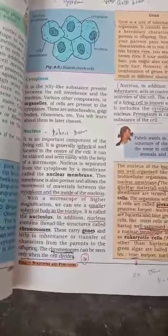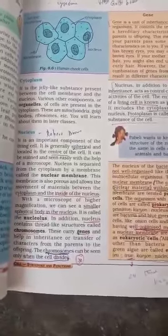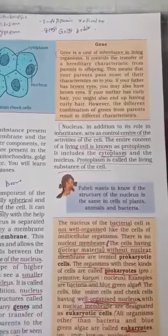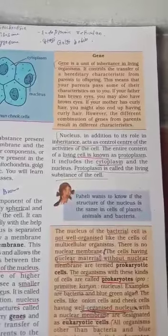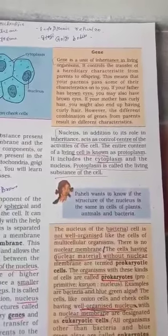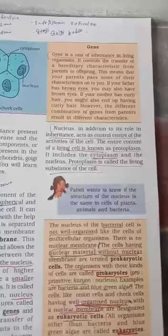Chromosomes can be seen only when the cell divides. The gene is a unit of inheritance in living organisms.